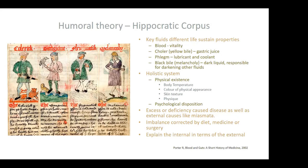So what was the humoral theory? It was written about in the Hippocratic corpus — Hippocrates being an almost legendary figure, with the corpus being about 60 books written by various people. Basically it consists of the idea that contained within the skin there are key fluids with different life-sustaining properties: blood, which adds to vitality; cola or yellow bile, which is your gastric juice; phlegm, a lubricant or coolant — essentially any clear fluid; and melancholy or black bile, a dark fluid responsible for darkening other fluids. Something like melena would be a case of melancholy.